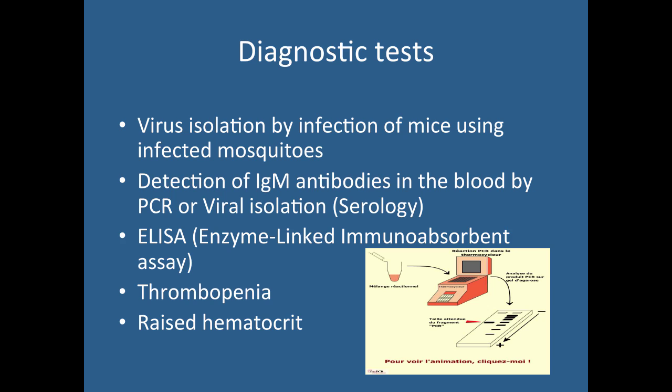Diagnostic tests for dengue are very few and expensive. They are primarily serological and molecular-based, including virus isolation via mosquito, infecting mice to confirm viral infection, detection of antibodies by PCR, viral isolation, serology, and ELISA. Less specific diagnostics include examining the blood for raised hematocrit or thrombocytopenia — these have lower specificity but can suggest infection. For high specificity, you need ELISA or PCR methods.